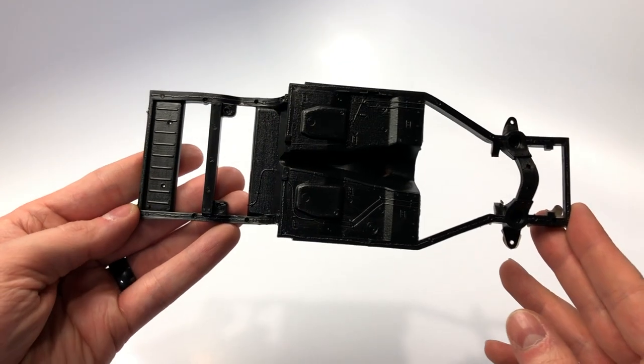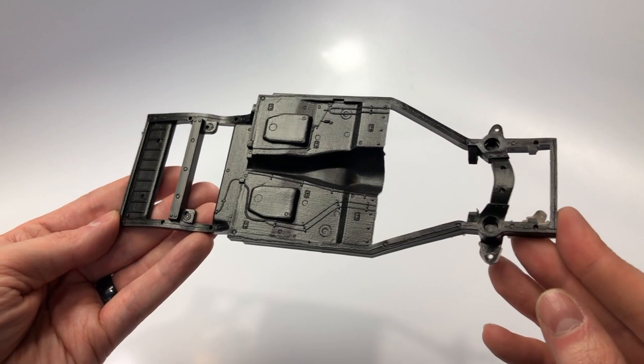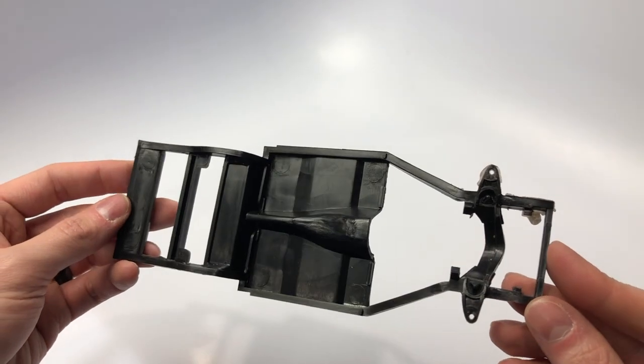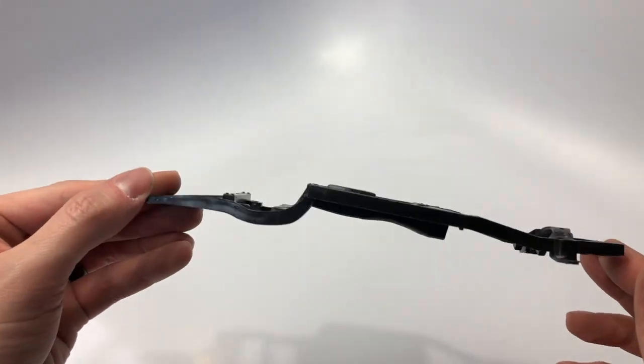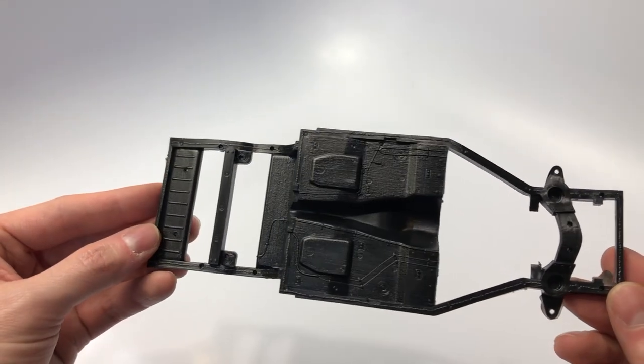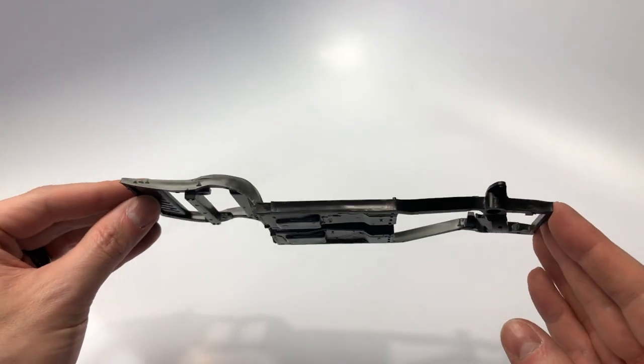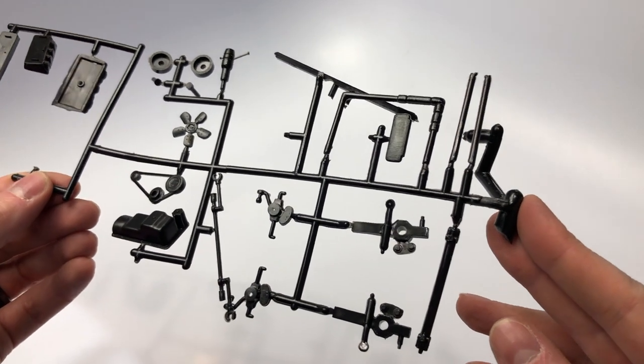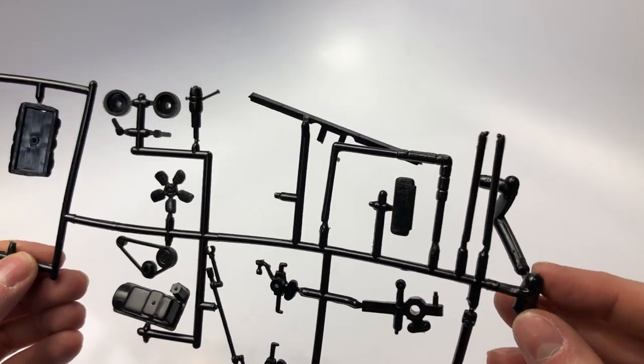The chassis has some basic details but nothing that stand out as over the top of this kit. The manifold has nice detail to it on the sprue including other parts we see here on the parts tree.